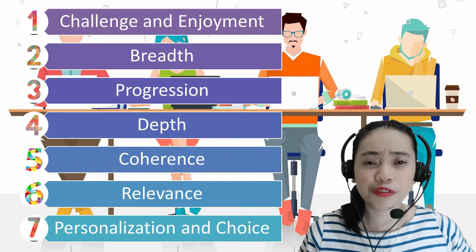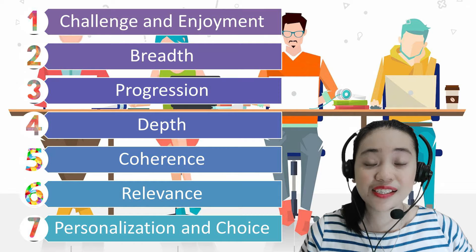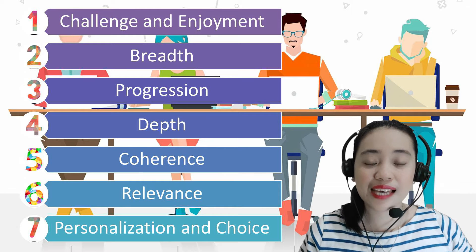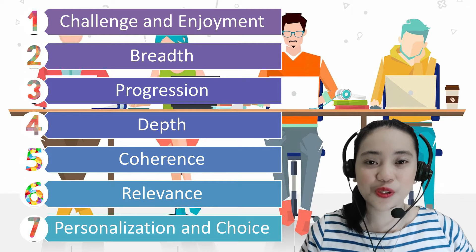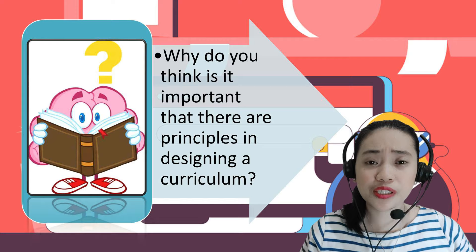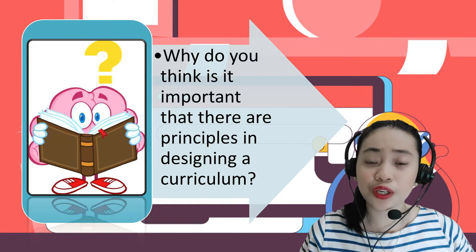There are seven principles of curriculum design. These are challenge and enjoyment, breadth, progression, depth, coherence, relevance, and personalization and choice. Why do you think it is important that there are principles in designing a curriculum?